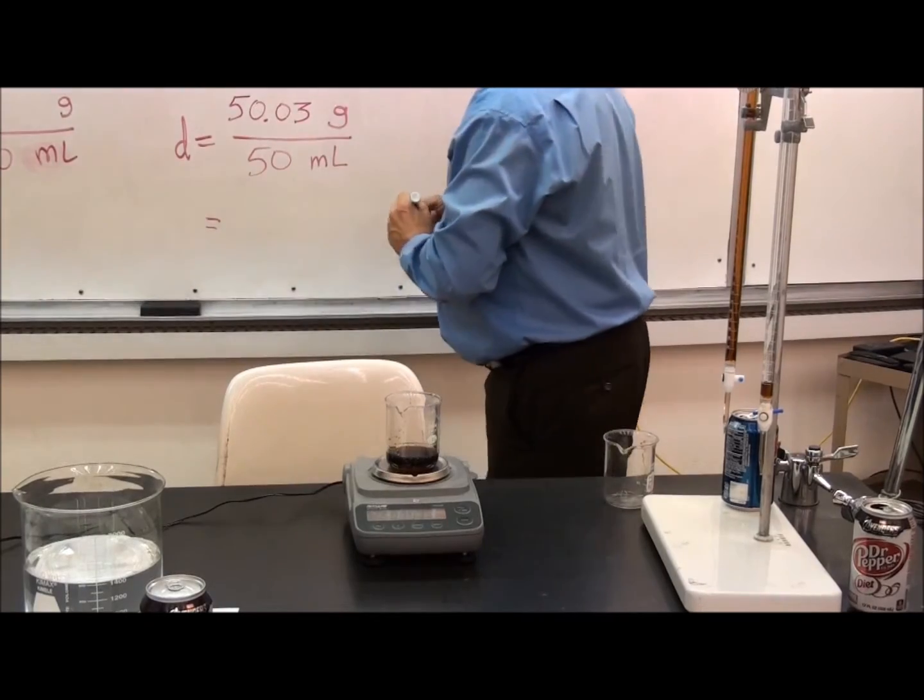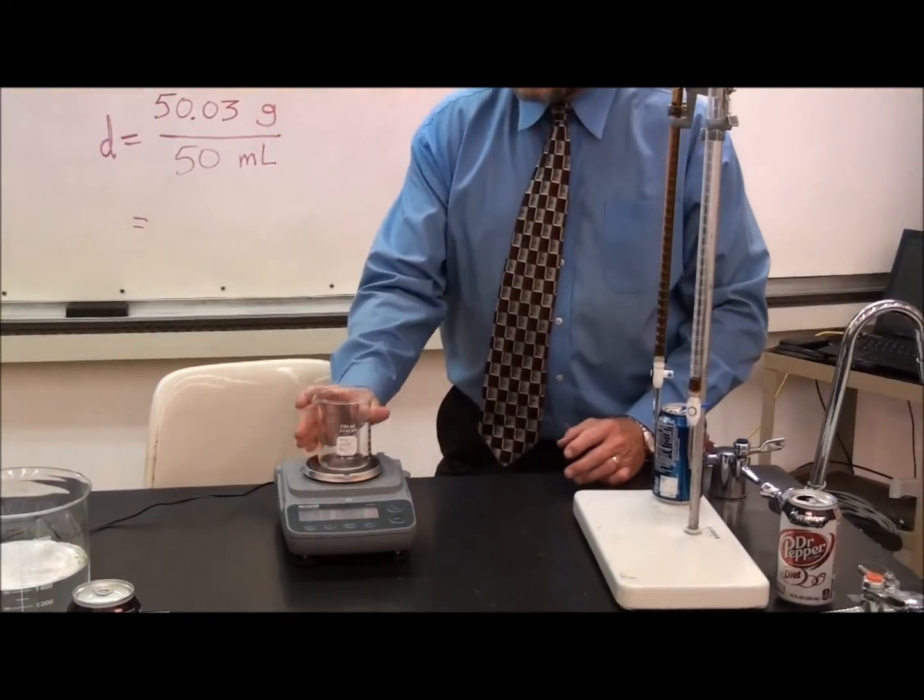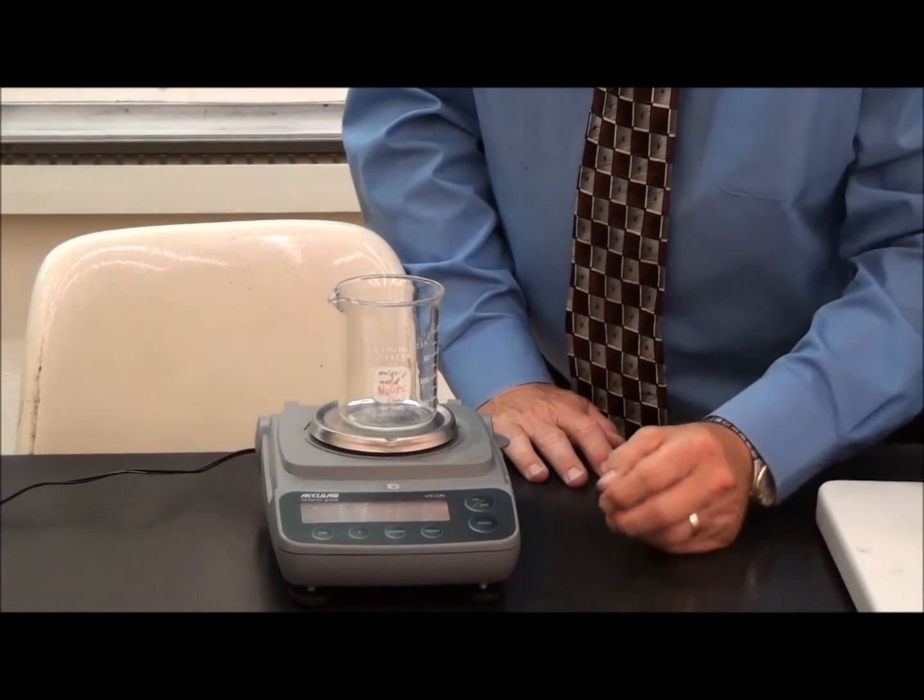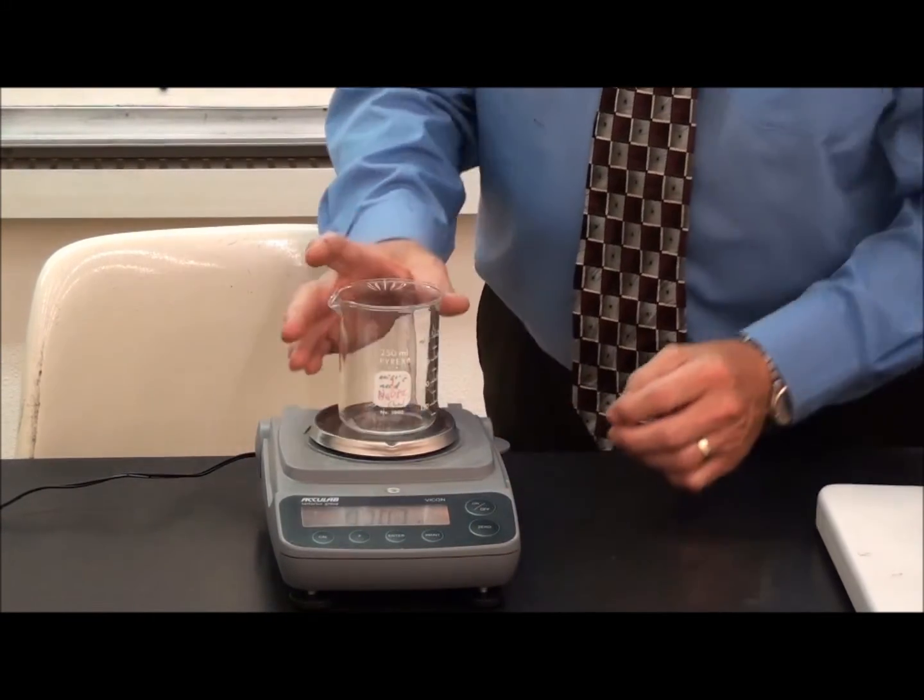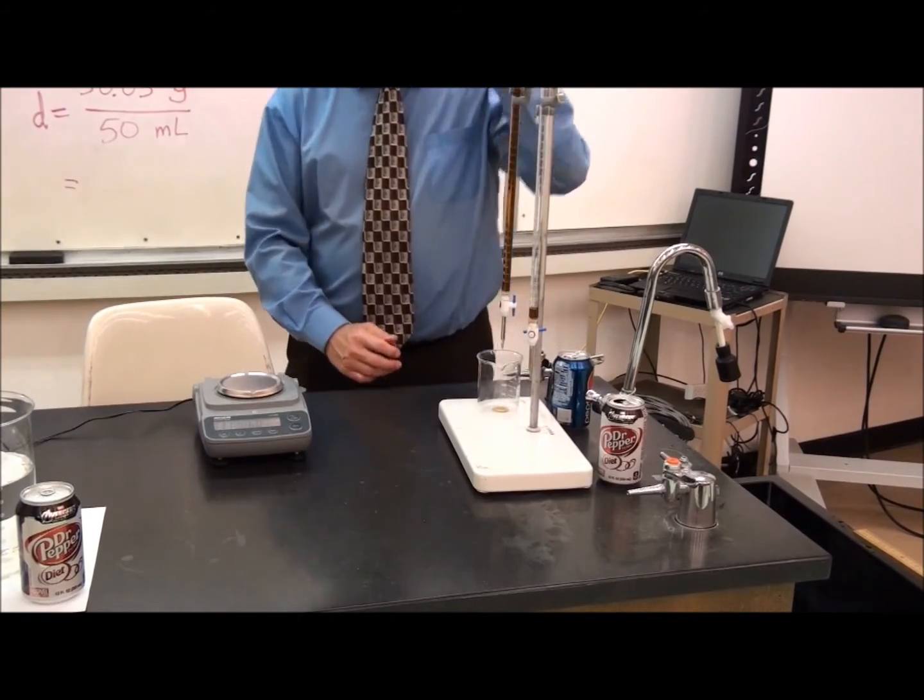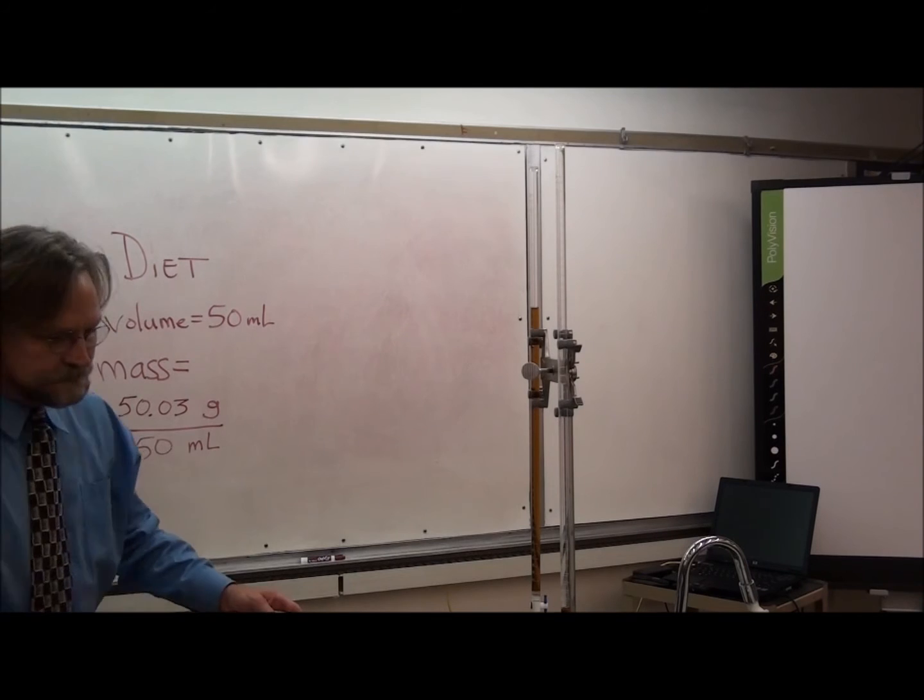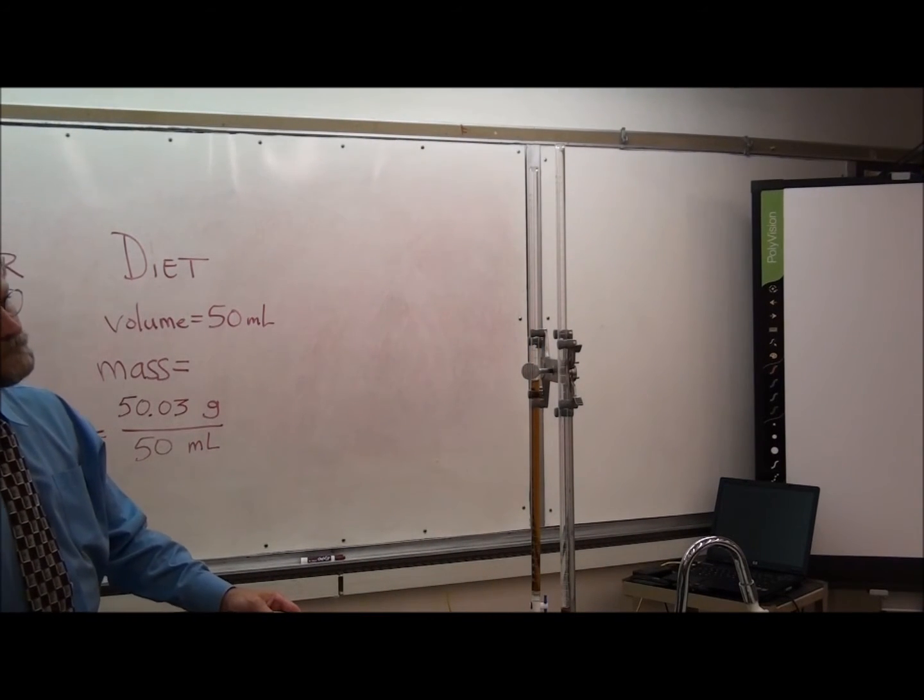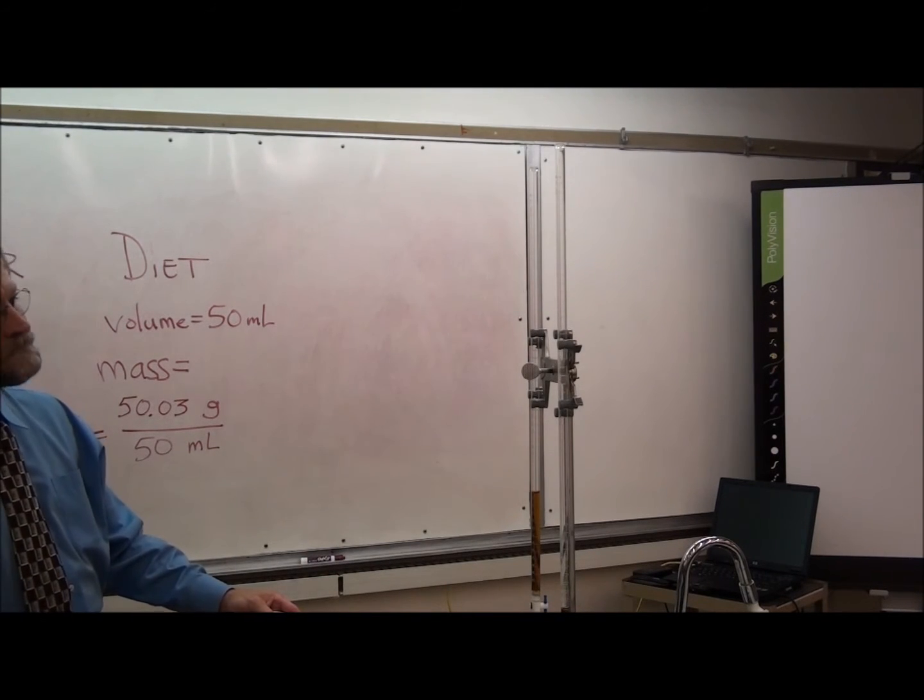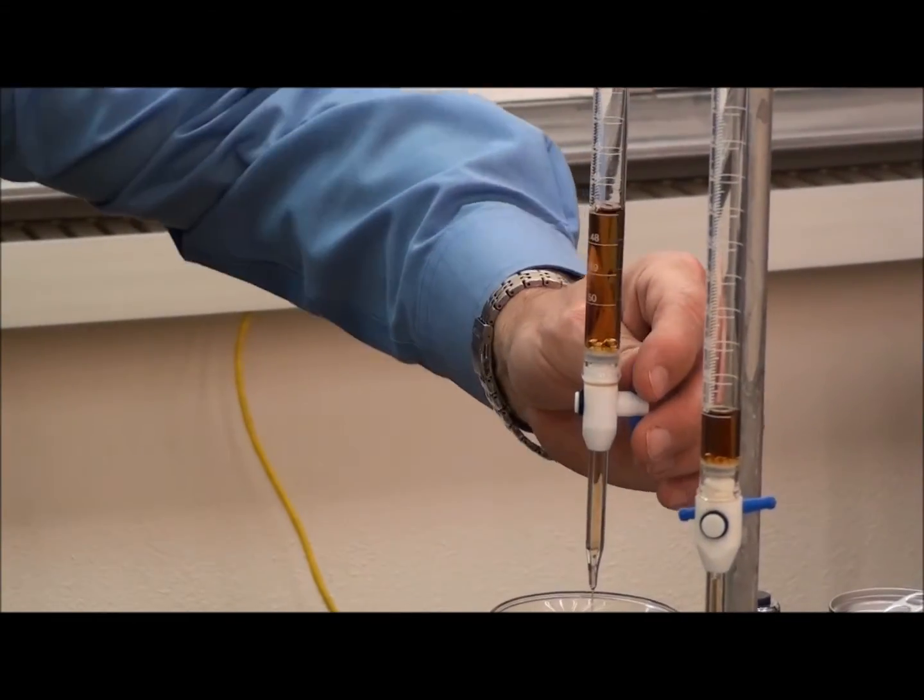He will now take the second beaker and tare it. Once accomplished, he puts it underneath the burette and drains 50 milliliters of Pepsi into the beaker. We will speed this one up too. Once it gets close to the 50 milliliter mark, we slow it back down again.